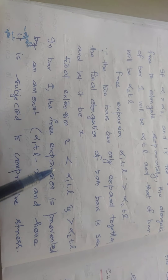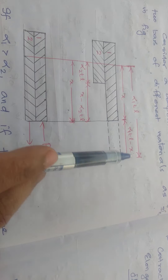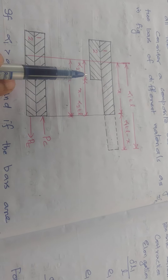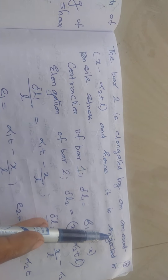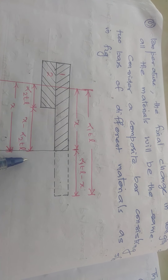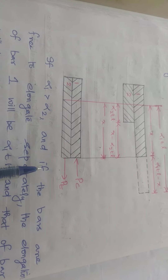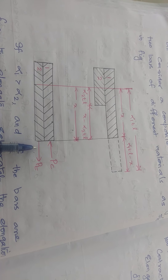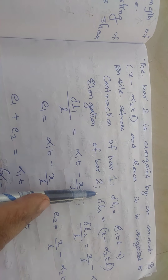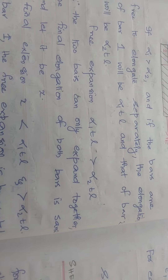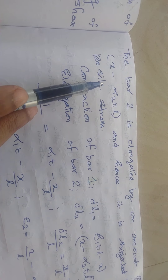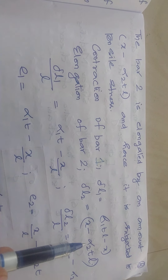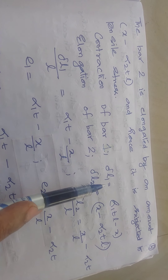In bar 1, the free expansion is prevented by an amount alpha 1 × T × L minus x, and it is subjected to compressive stress. In bar 2, the bar is elongated by an amount x minus alpha 2 × T × L, and it is subjected to tensile stress. So bar 1 is subjected to compressive stress (Pc) and bar 2 is subjected to tensile stress (Pt). The contraction of bar 1 is delta L1 = alpha 1 × T × L minus x, and the elongation of bar 2 is delta L2 = x minus alpha 2 × T × L.